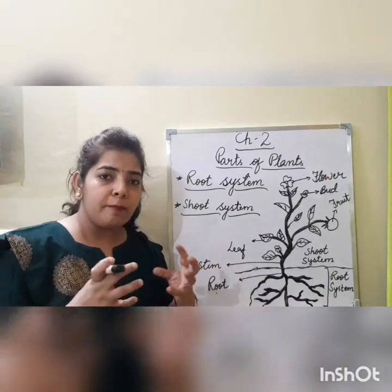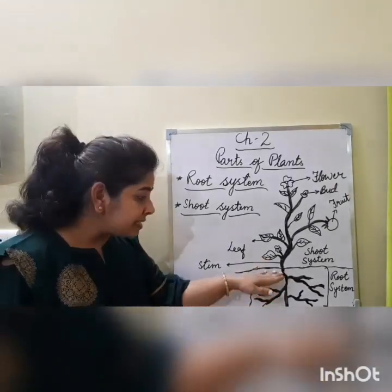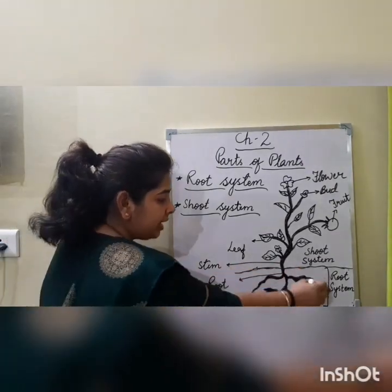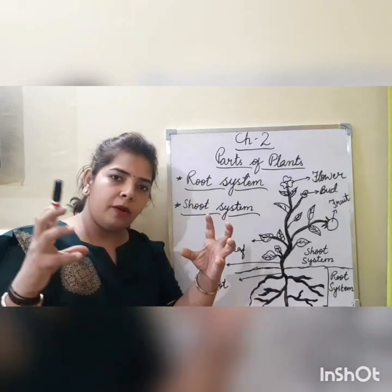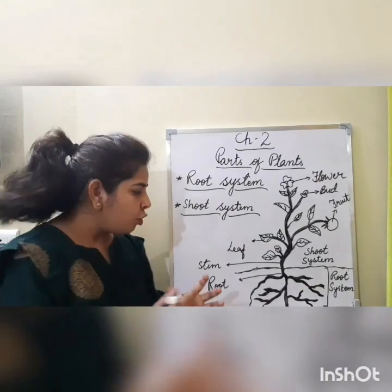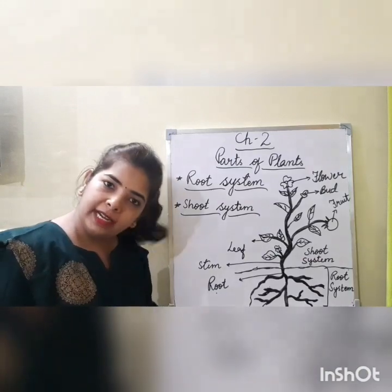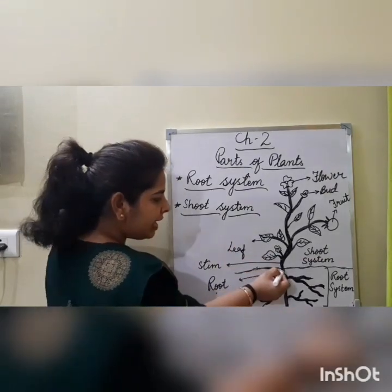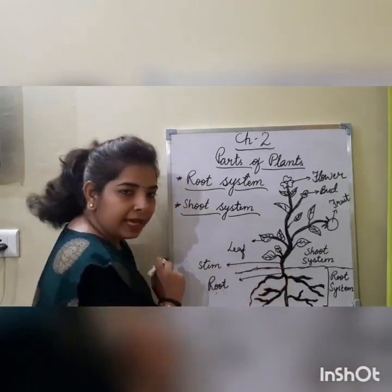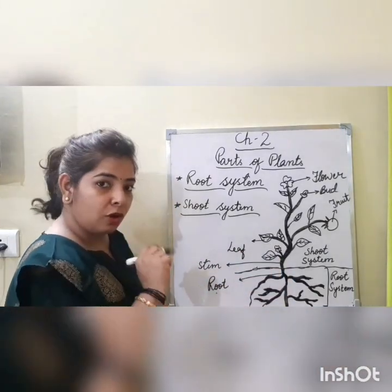Root absorbs the minerals and water from the soil. Root goes under the soil and absorbs all the water and minerals present in it. Root absorbs those minerals and water. Then root will pass them to the stem.